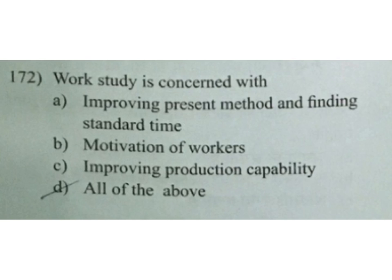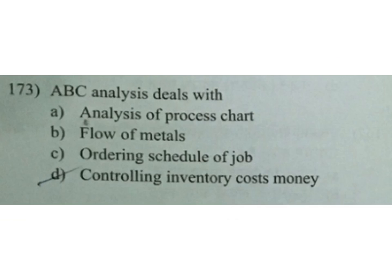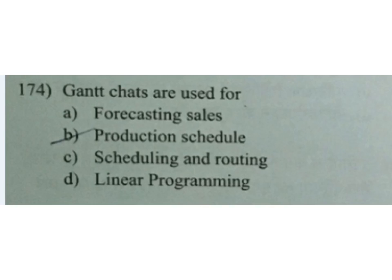Analysis deals with: A analysis of process chart, B flow of metals, C ordering schedule of job, D controlling inventory costs. This is an IES question, and it was also asked in RINL previous year. Gantt charts are used for production scheduling.